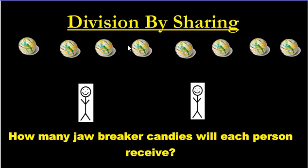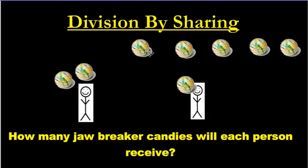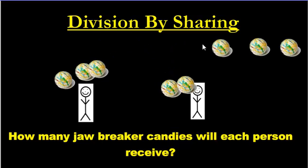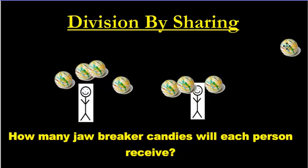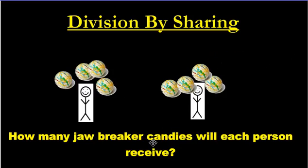If you count them: 1, 2, 3, 4, 5, 6, 7, 8 — we have 8 altogether and we want to split them up. Here's how you do it: you go 1, 2, 1, 2, 1, 2, 1 and 2. You split them up that way and the answer is everybody gets 4 — 4 for each person.